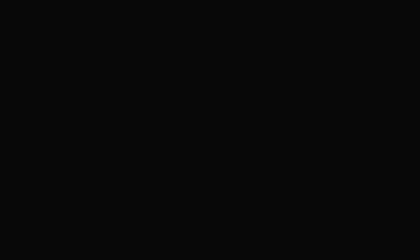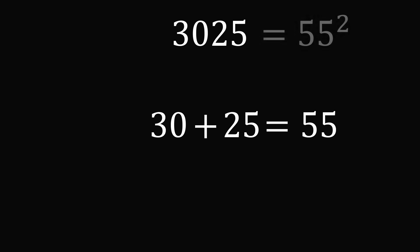The next number with this property is 3025. If we split it down the middle, we get the two numbers 30 and 25. Their sum is equal to 55, and 55 squared is equal to 3025.